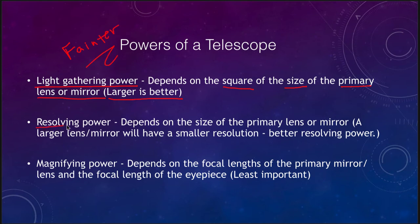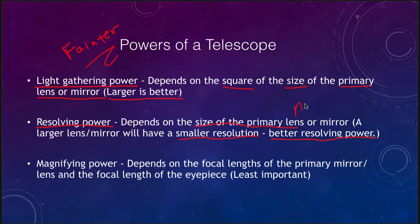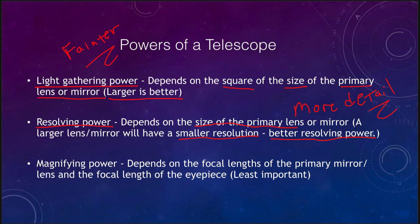The second power is resolving power, which also depends on the size of the primary lens or mirror. A larger lens or mirror will have smaller resolution, but a smaller resolving power value is good — it means better resolving power. A large telescope allows you to see more detail and to resolve objects that are closer together, which could not be separated in a smaller telescope.